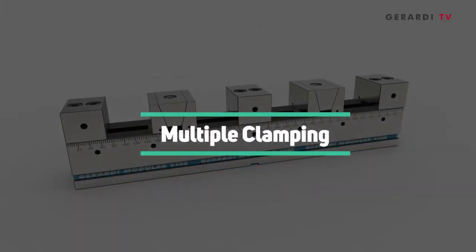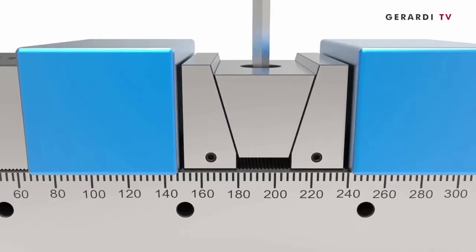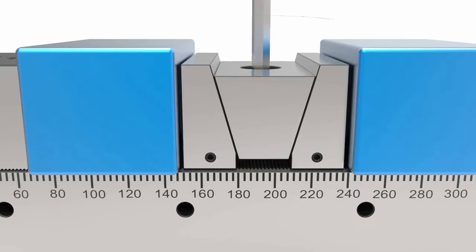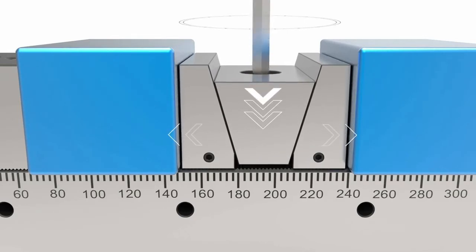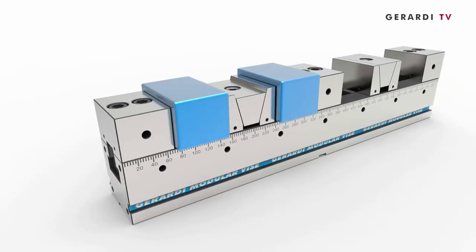A very recent development are the multi-flex double vises which allow, with a single action, the clamping of two workpieces. A downward wedge pushes the jaw plates in opposite directions, clamping in this way two different workpieces.